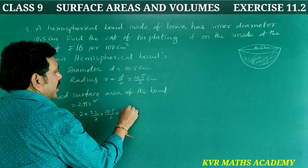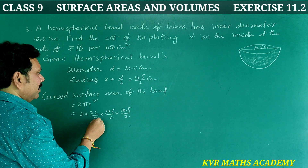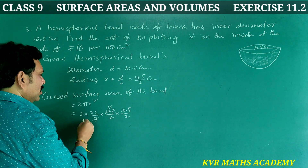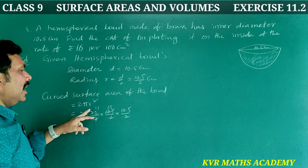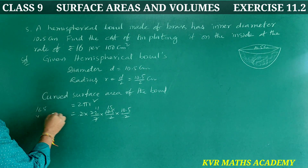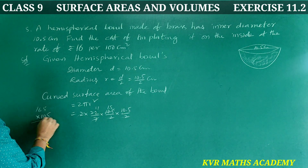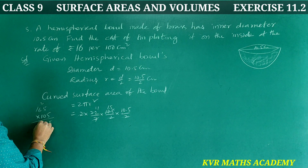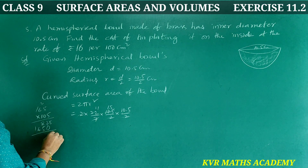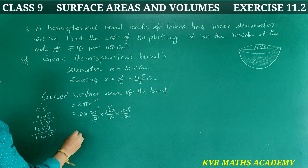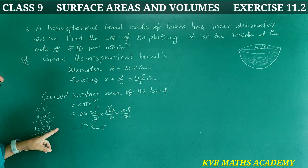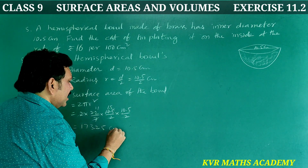Simplifying: the 7 in the denominator cancels with 10.5 (since 10.5/7 = 1.5), and the 2s cancel partially, giving 11 × 1.5 × 10.5 = 11 × 15.75 = 173.25 cm². The curved surface area of the bowl is 173.25 cm².